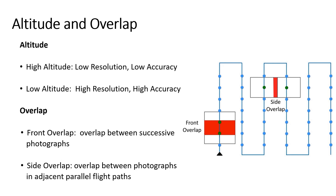The overlap matches features between photographs. There are two types of overlap. In side overlap, the overlap happens between photographs in adjacent parallel flight paths — here in this image you can see the adjacent parallel flight paths and the side overlap. Front overlap is the overlap between successive photographs on a flight path — here in this image you can see the front overlap and the successive photographs. Increasing the overlap in a flight creates more matched points and greater accuracy.